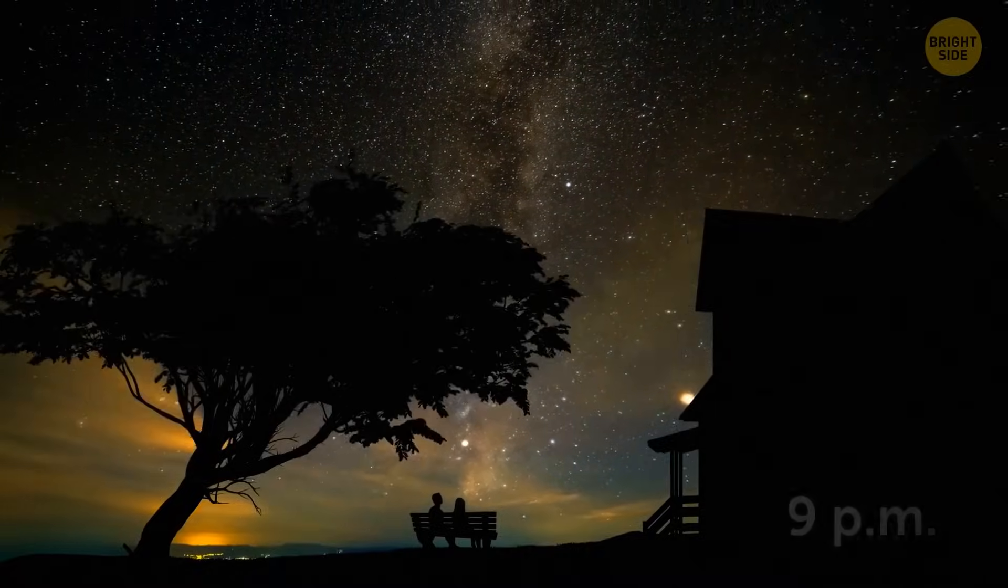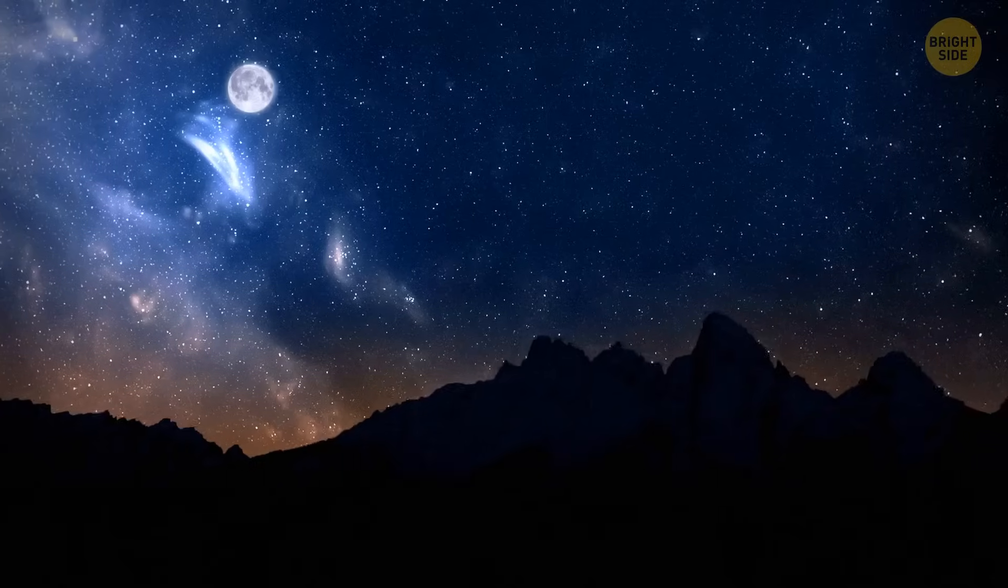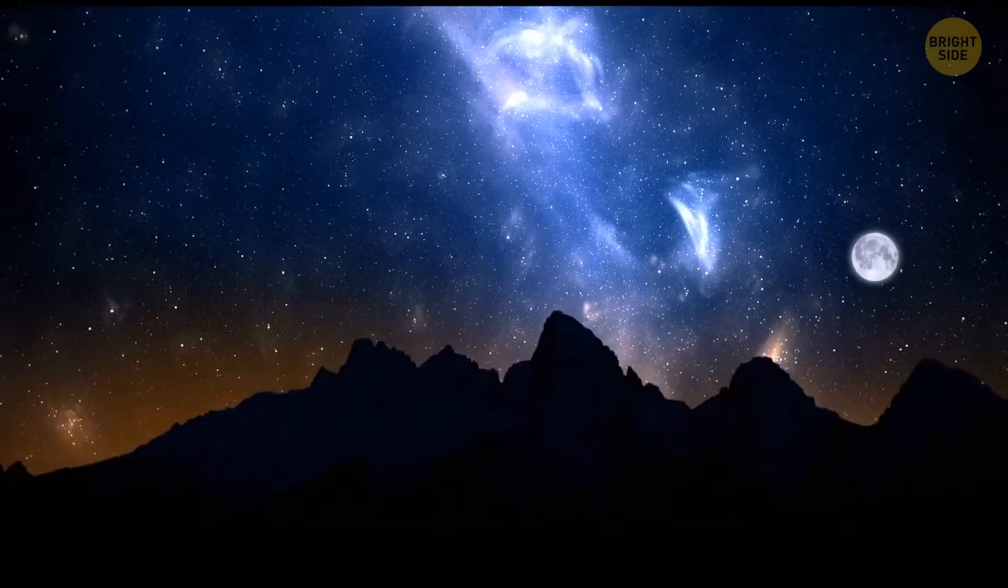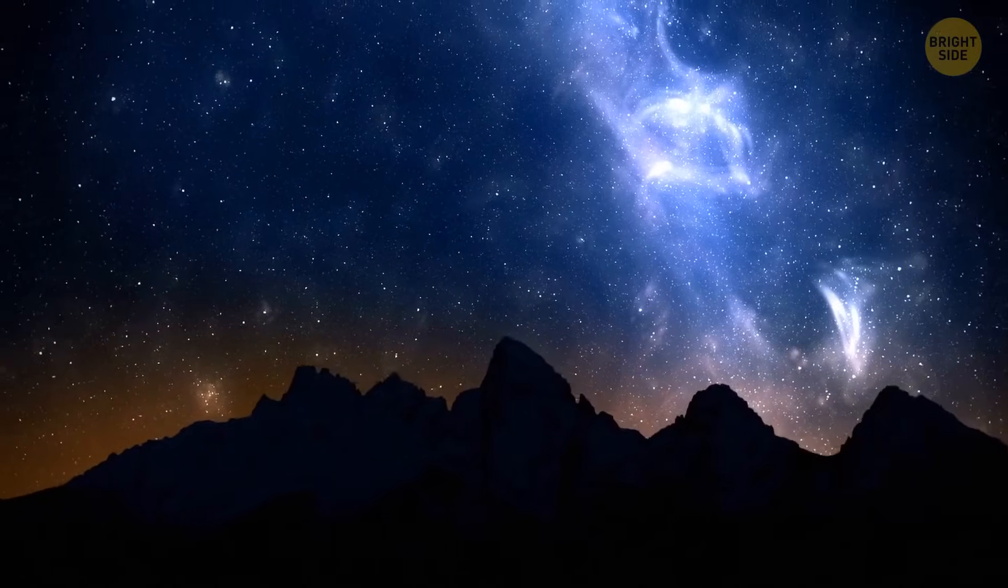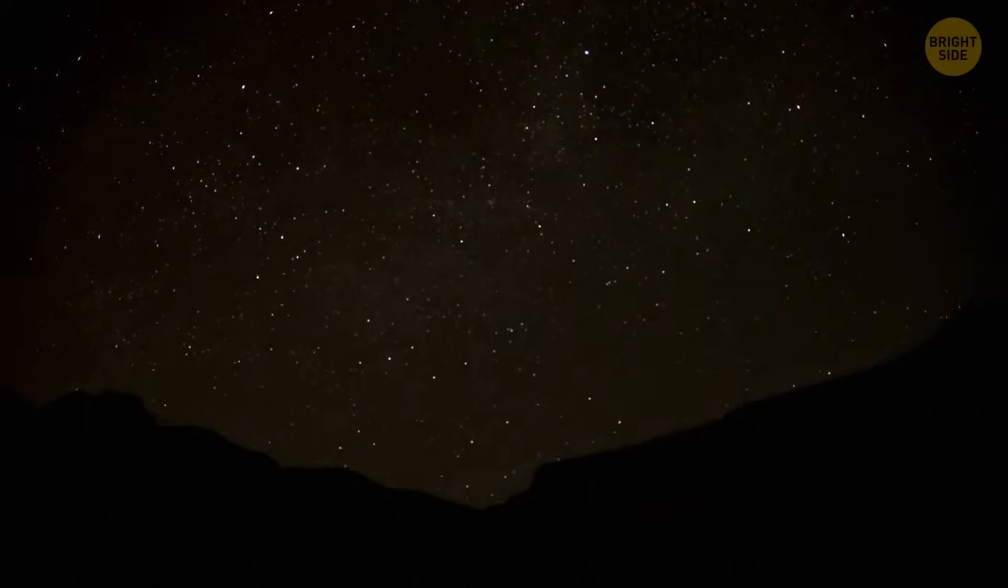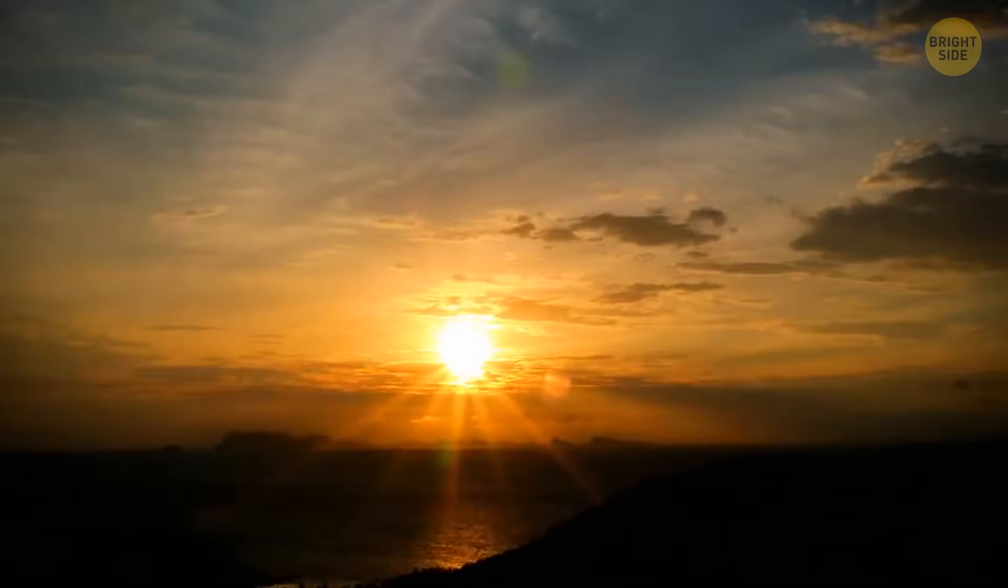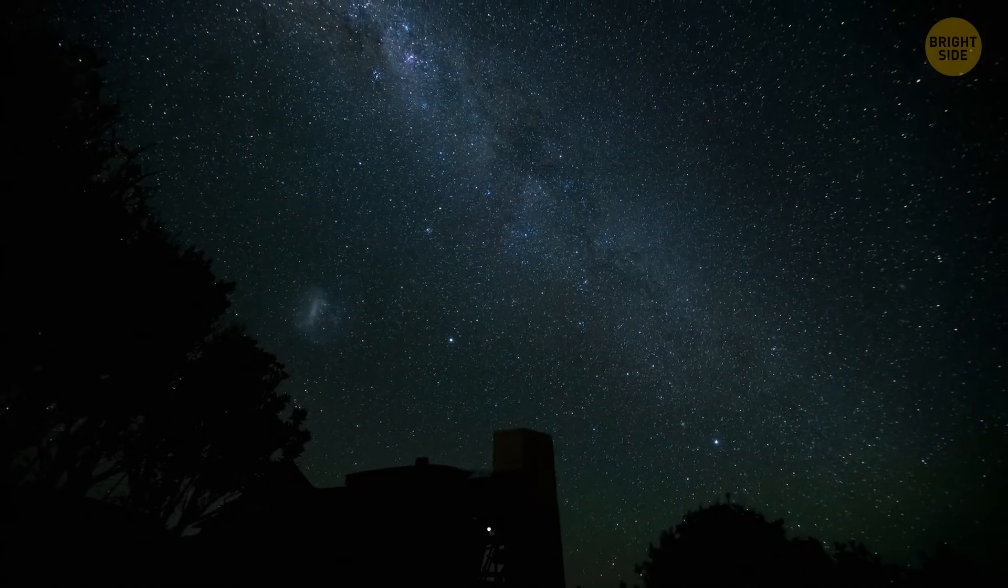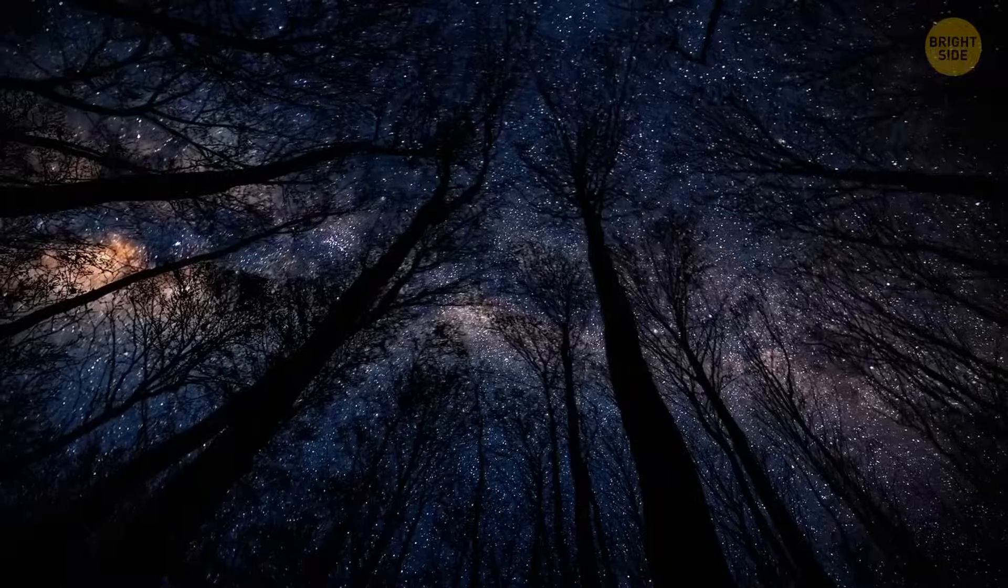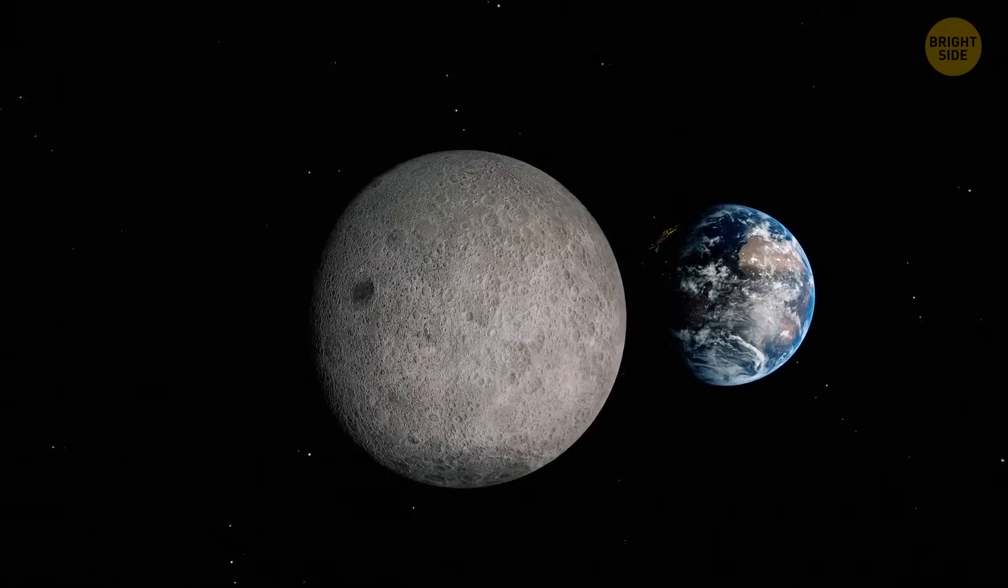Ever notice how when you're stargazing two nights in a row at the same time, let's say 9pm, the stars stay in the same place, but the moon doesn't? Well, there are two reasons for that. First, it depends on what time you go stargazing. If you went outside two nights in a row at the same hour, in most cases, you'll have to wait for an extra half hour or more until the moon gets back to the same position as the night before. The stars are pretty much standing still. It seems like they're moving, but that's because the Earth is spinning. But the moon is actually moving around our planet and goes through different phases.